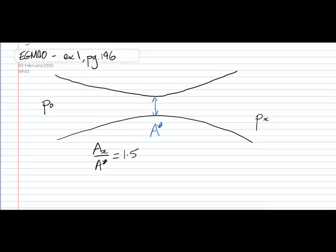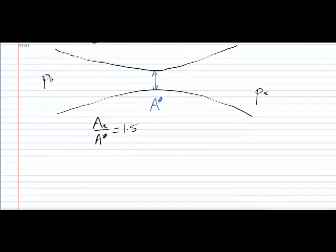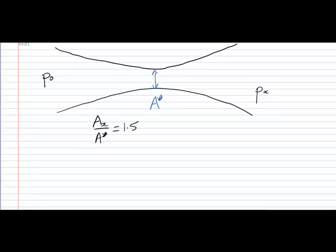Now we know that if the nozzle is choked, i.e. if there is a sonic condition at the throat, we know that the Mach number at the throat is 1 and that M dot root CP T0 over A P0 at the throat is 1.281